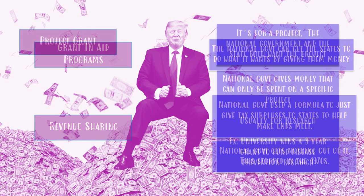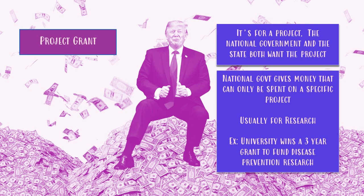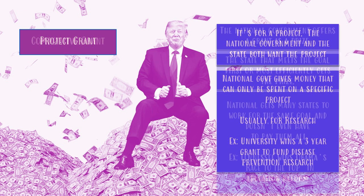Let's talk first about a project grant. A project grant is exactly what it sounds like — a grant for a specific project. The national government gives money for something specific, maybe a bridge or a library, but usually this goes toward research. For example, a university system might get a three-year project grant to do disease prevention research. The national government gives money to the states and tells them exactly what to use it for.